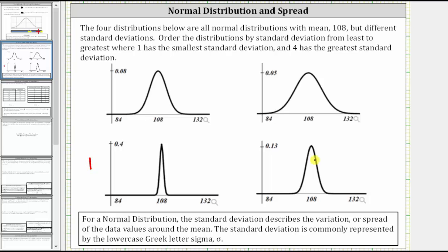Looking at the remaining three graphs, we want to determine which has the least spread, which would have the next smallest standard deviation — this graph here in the lower right-hand corner. Now looking at just the top two graphs, we're looking for the graph with the least spread or least variation from the mean, which would be the graph here in the upper left-hand corner, leaving us with this last graph in the upper right-hand corner that has the most spread or the greatest standard deviation.